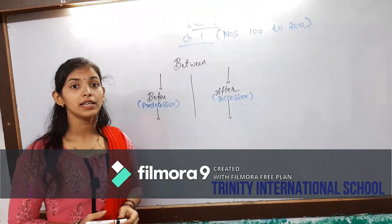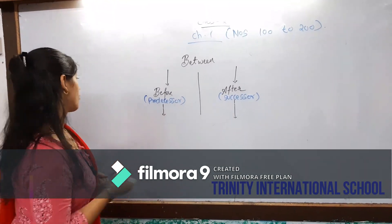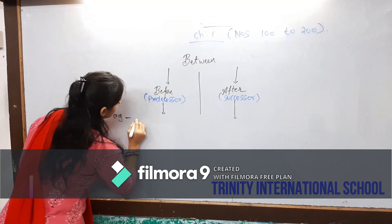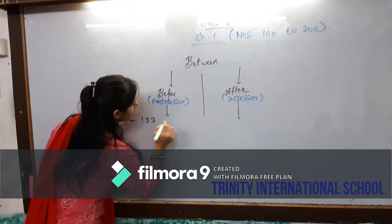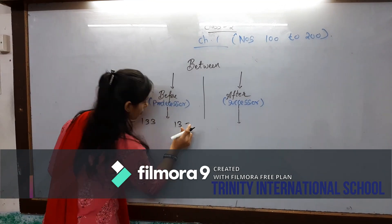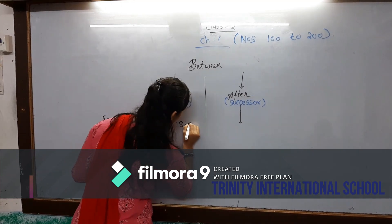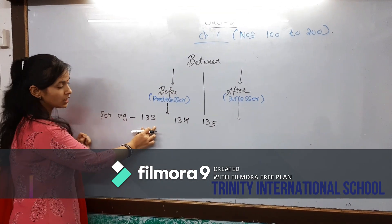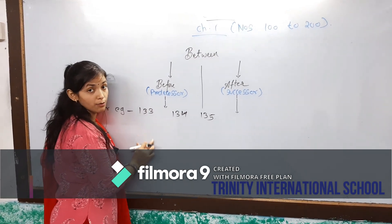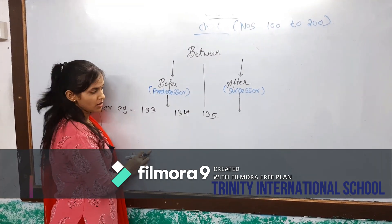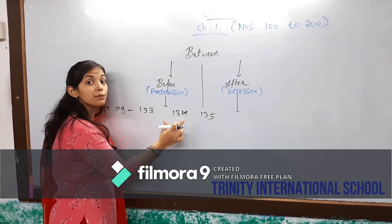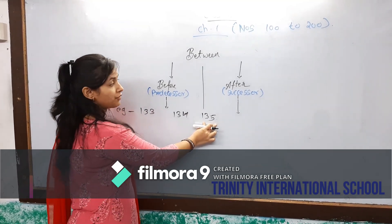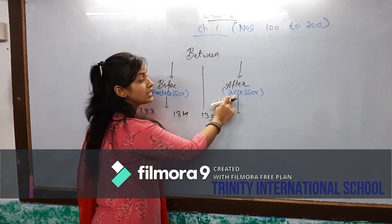We will take a few more examples. That is 133, 134 and 135. 133 is your before number — before means predecessor. 134 means between. And 135 is your after — after we can say successor.